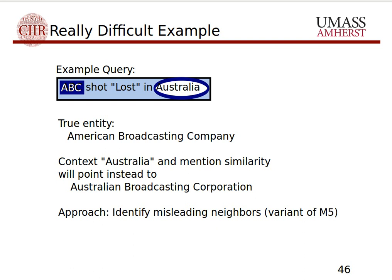This method fails when the context is misleading. Here's a difficult example: the TV series Lost was aired on American television, shot by the American Broadcasting Company. The text fragment reads 'ABC shot Lost in Australia.' The true entity is the American Broadcasting Company, represented by its acronym ABC, but there's another entity with the same acronym — the Australian Broadcasting Corporation. Because 'Australia' appears in context, it's such a strong indicator pointing to the wrong entity that we will always predict incorrectly here.